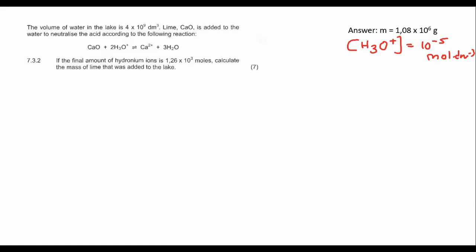So we are told that the volume of water in the lake is 4 times 10 to the power of 9. That's the volume of water in the lake. I'll draw you guys a nice little picture. So we've got this lake, and this lake has a volume of 4 times 10 to the 9, and maybe there's a bit of acid in the lake.